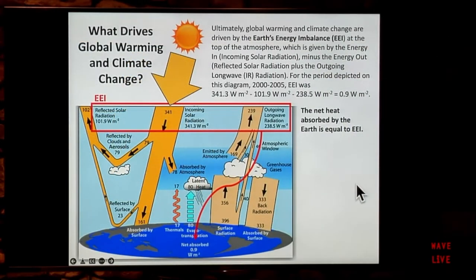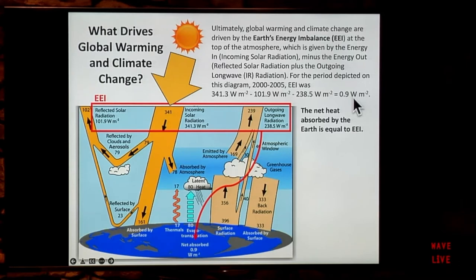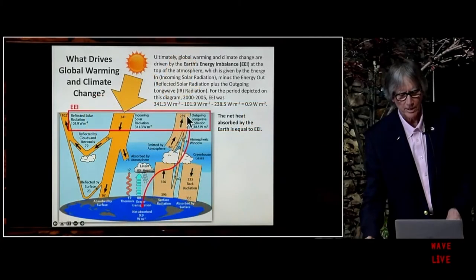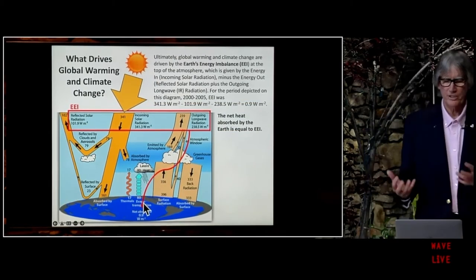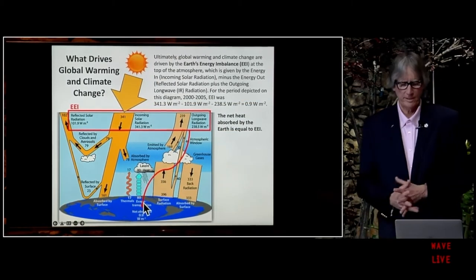For the six-year period depicted here, the EEI is the sum of these numbers — basically the energy in minus the energy out. If you add these numbers up, you come out with 0.9 watts per square meter. The particularly important point is that this is in fact exactly how much the earth is warming. This EEI parameter — Earth's Energy Imbalance — is essentially the sum of these three numbers at the top of the atmosphere and equates to how much heat the earth is absorbing.